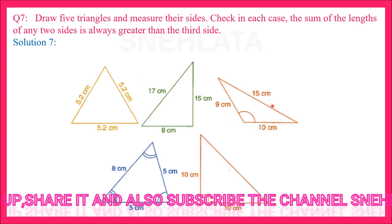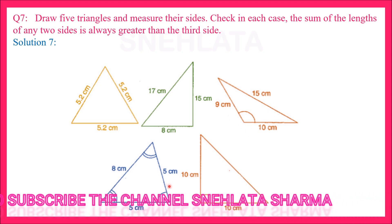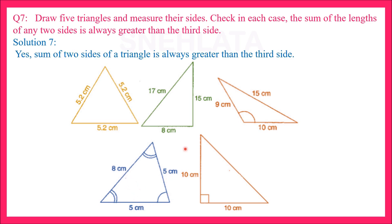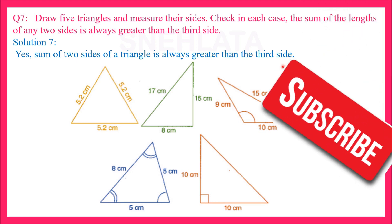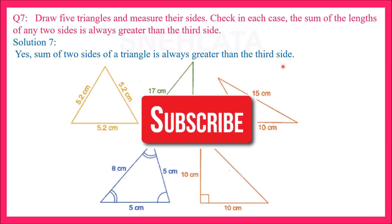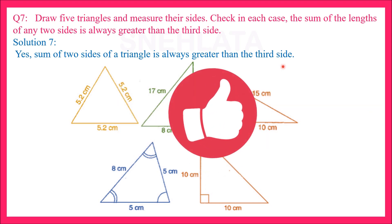Isi tarike se 4th triangle mein sabse badi side 8 cm hai, baki bachi hui dono sides 5 + 5 = 10, jo 8 cm se zyada hai. Maine in 5 triangles se is property ko verify kar diya that the sum of length of any 2 sides is always greater than the third side. Yes, sum of 2 sides of a triangle is always greater than the third side. Aapko bhi isi tarike se apne triangles draw karne hain aur is property ko verify karna hai. I hope yah exercise aapko samajh mein aayi hogi. Phir milte hain naye video mein nayi exercise ke saath. Tab tak dekhte rahiye, seekhte rahiye, share kariye, aur agar video pasand aata hai to like bhi kar dijiye.